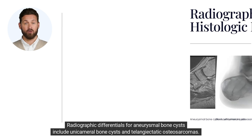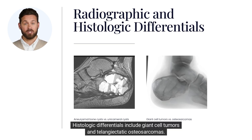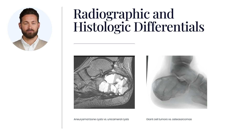Radiographic differentials for aneurysmal bone cysts include unicameral bone cysts and telangiectatic osteosarcomas. Histologic differentials also include giant cell tumors and telangiectatic osteosarcomas.